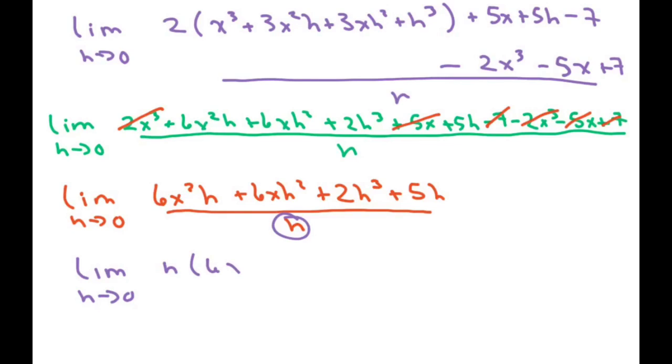And we get 6x² + 6xh + 2h² + 5 all over h. Now what happens is these h's cancel. And I can go ahead and substitute now.